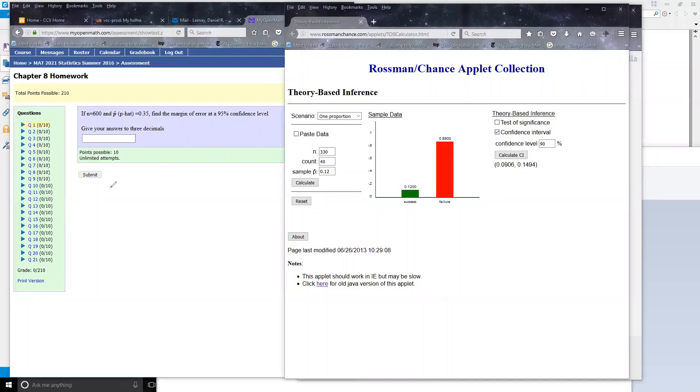So as you've seen in the book when you read it, the way you get the margin of error—and we know this deals with proportions because we're dealing with p-hat—so we're trying to estimate the population proportion.